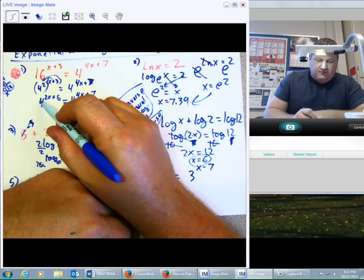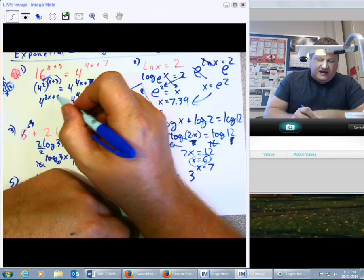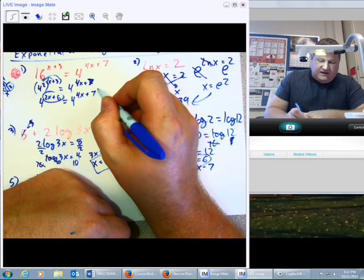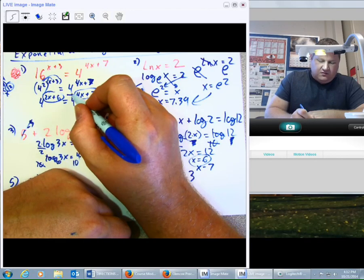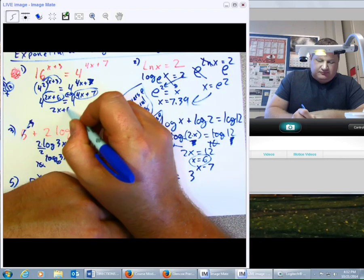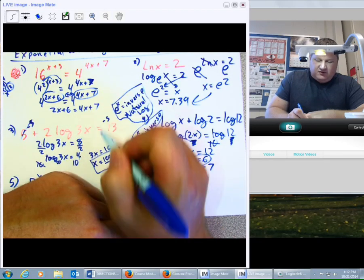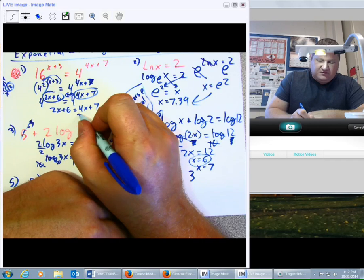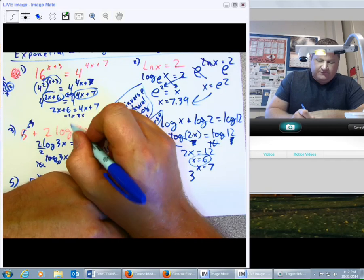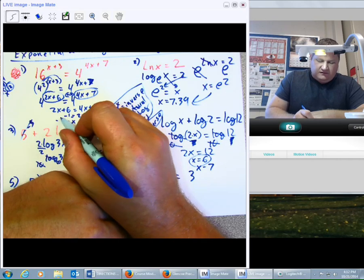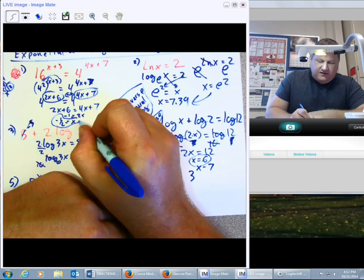But if the bases are the same, that must mean the exponents are also the same. So, 2x plus 6 equals 4x plus 7, and at this point I just simply begin to solve. x equals negative 1 half. There we go.